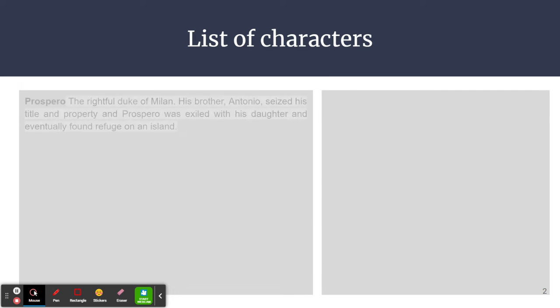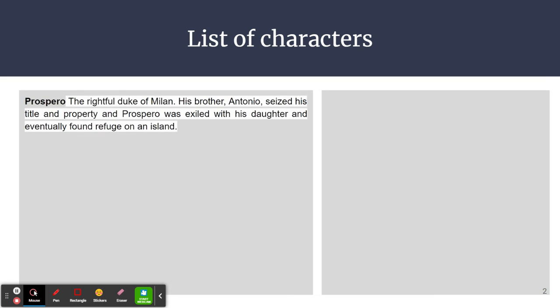First, let's have a look at the list of characters. The first important character is, of course, Prospero. He is the protagonist of this play. He was the rightful duke of Milan. His brother Antonio seized his title and property, and Prospero was exiled with his daughter and eventually found refuge on an island.